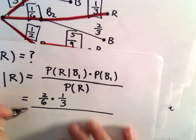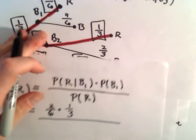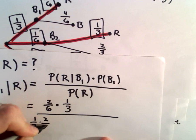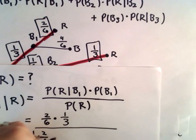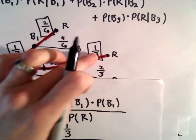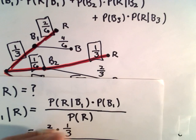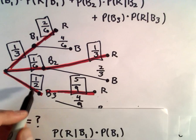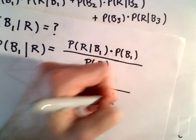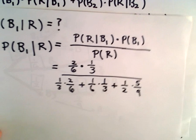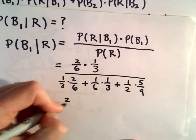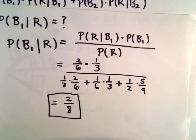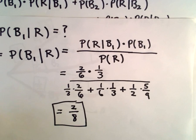So in the denominator, the probability of getting a red coin, that's going to be one-third times two-sixths. I'm just multiplying these two values together. And then we'll add, and next we'll just take one-sixth times one-third. And then last but not least, we'll take one-half times five-ninths. You can check my arithmetic here. I'm not going to go through all of this. I got this to equal two-eighths, or certainly you can reduce it down to one-fourth.